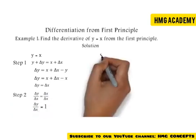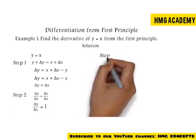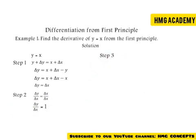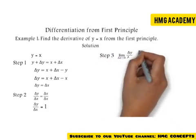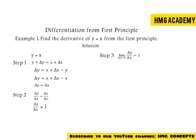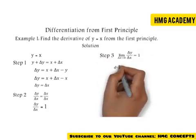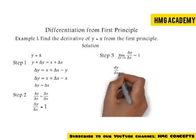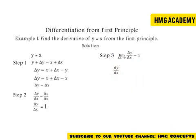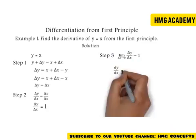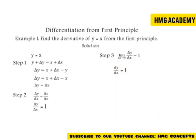Now we take the limiting value so that we can change from delta to the real derivative. The limit of delta y over delta x as delta x tends to zero is dy/dx, which equals one.